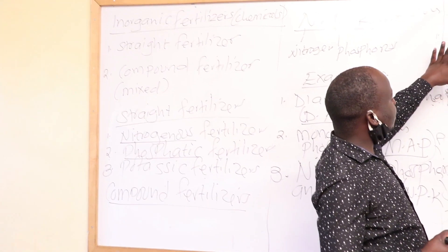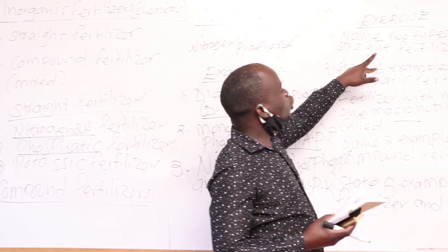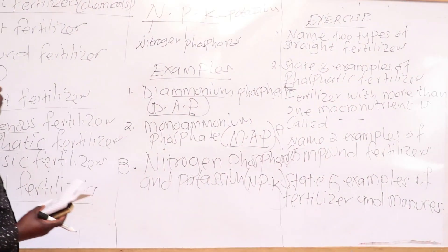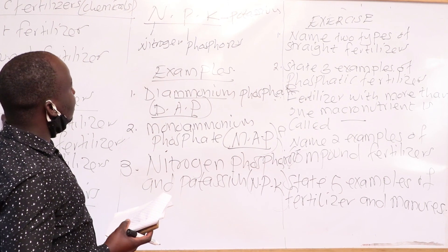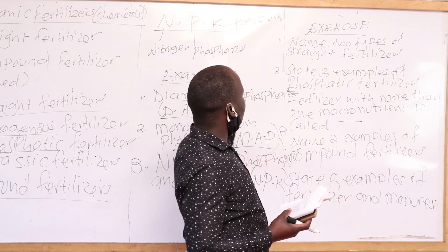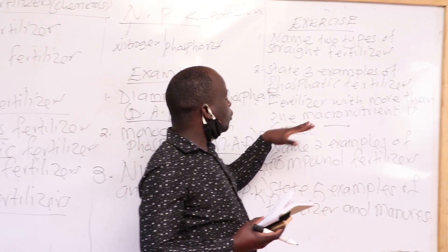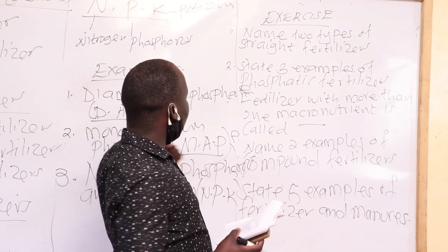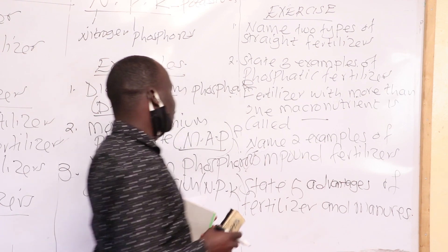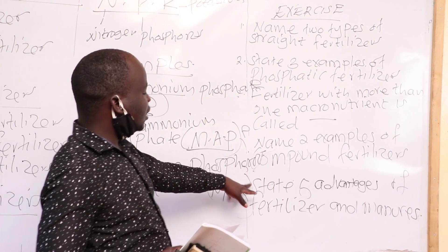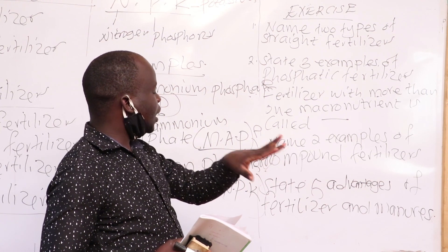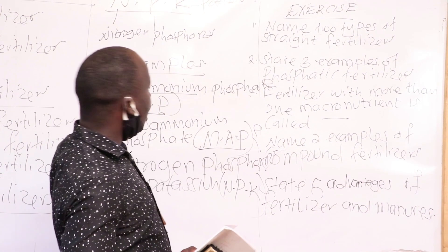As I wind up, there is an exercise here. Name two types of straight fertilizers. Name three examples of phosphatic fertilizers. Name two examples of compound fertilizers. And lastly, list advantages and disadvantages of fertilizers and manures — you can get these from the Primary Science pupil's book class 7 and add on what you already know about soil.